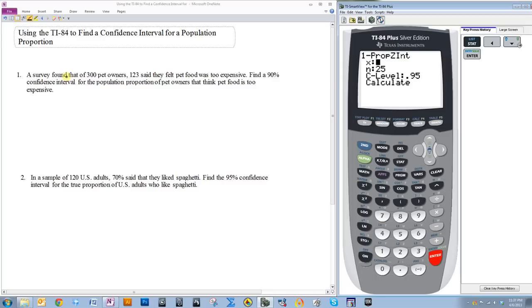Let's look at an example. A survey found that of 300 pet owners, 123 said they felt pet food was too expensive. Find a 90% confidence interval for the population proportion of pet owners that think pet food is too expensive.